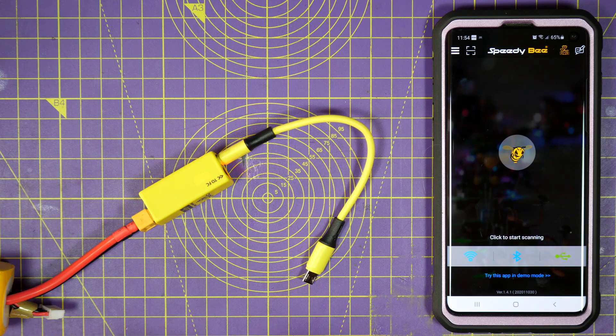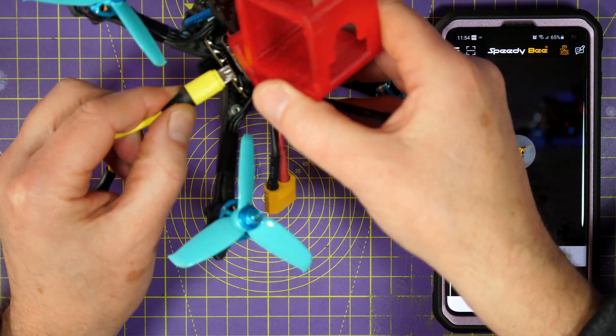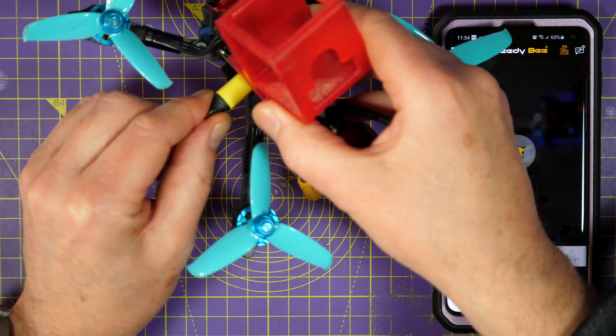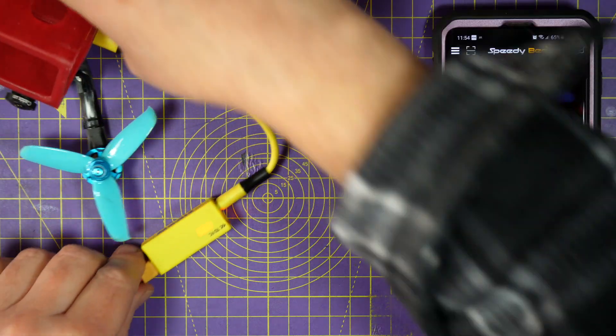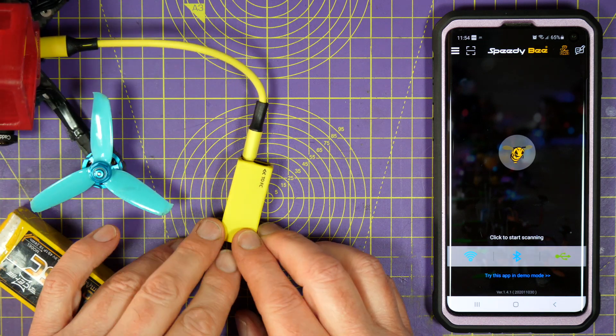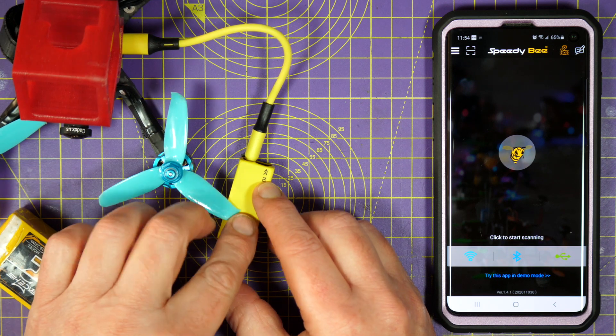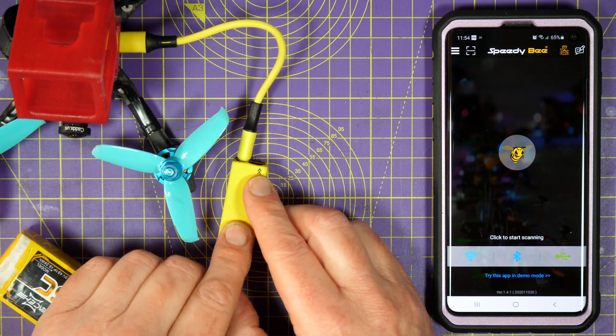And what we need to do is plug this into a quad. Now, that LED has started flashing. That means it's plugged into the quad, it's got power on it, but we don't have a Wi-Fi connection.